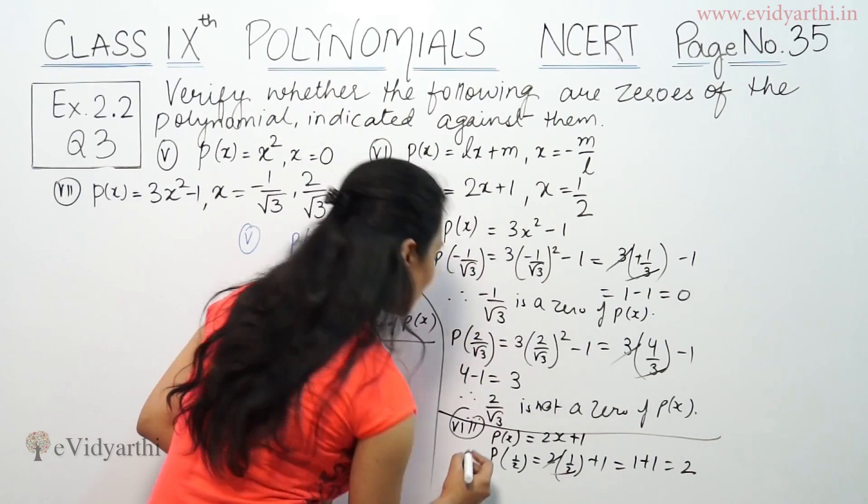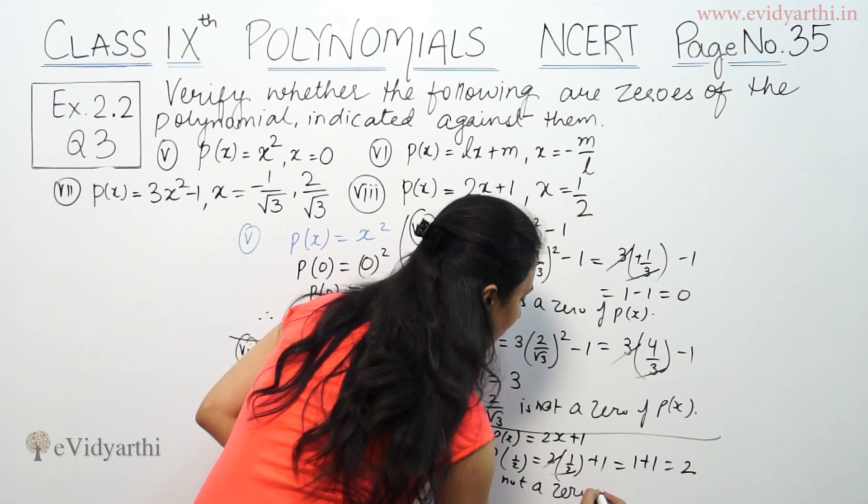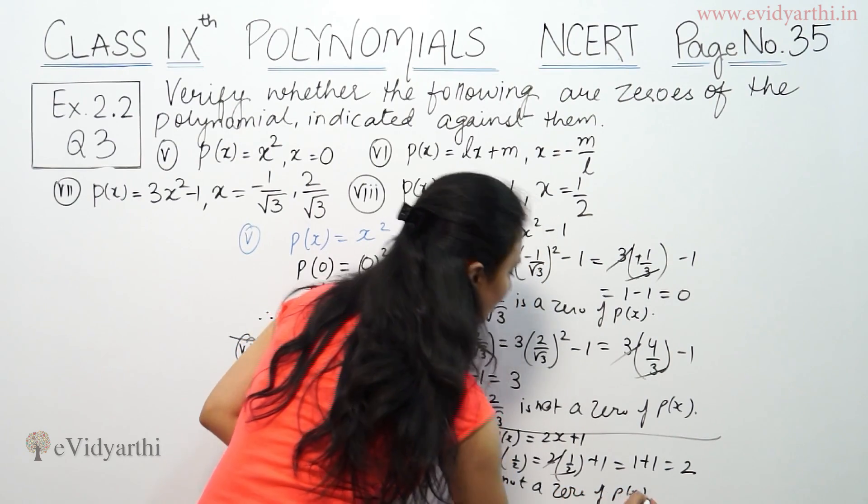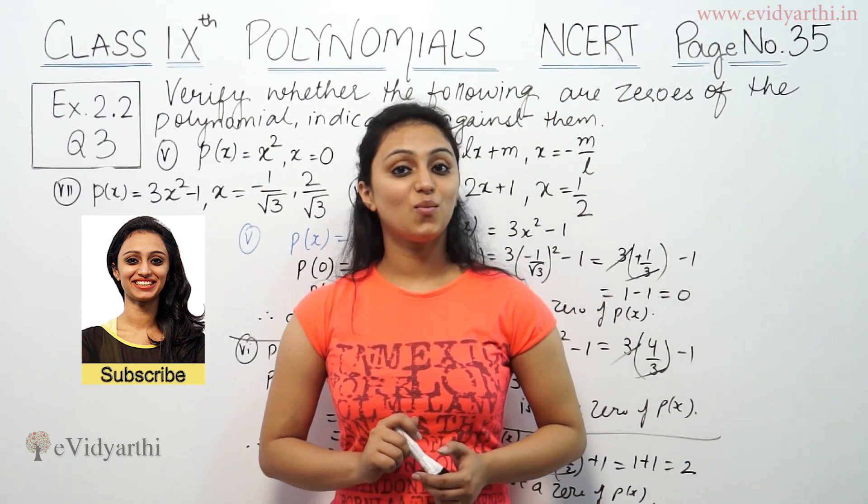That means 1/2 is not a zero of P(x). So this was the third question from exercise 2.2.